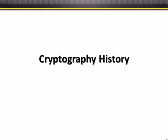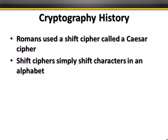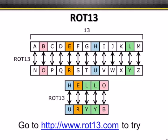A short history lesson. The Romans used a shift cipher called the Caesar cipher — one of the key ideas of confusion is just shifting things around. Shift ciphers shift letters; for example, move over three letters so A becomes D. One classic shift cipher is ROT13 — rotate 13 characters — where A becomes N, B becomes O, and vice versa. The interesting thing about ROT13 is the same algorithm encrypts and decrypts. You can try it at ROT13.com. So 'hello' becomes U-R-Y-Y-B.